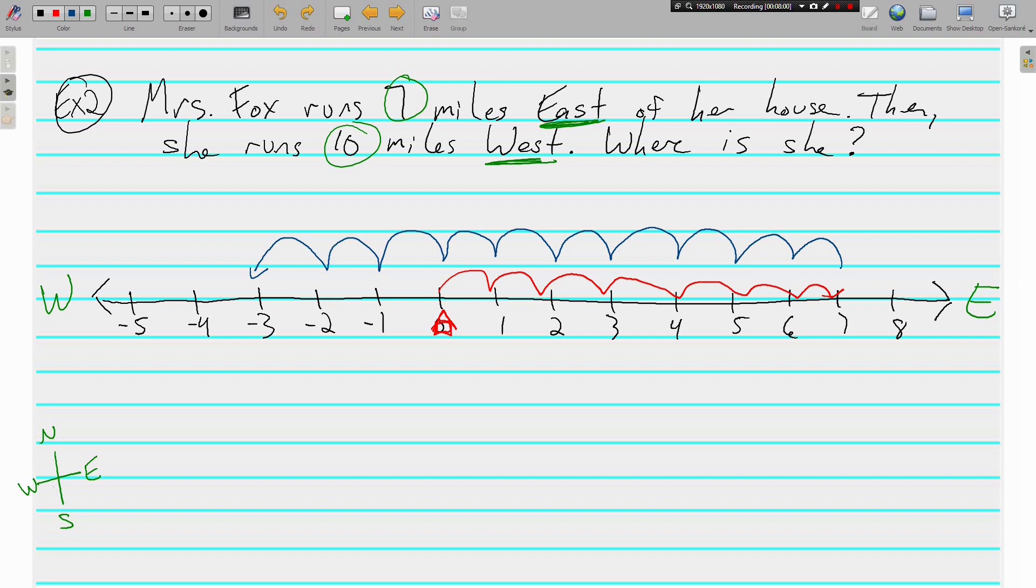Well, where is she? Well, she's right here. Where is this? Mrs. Fox is, she's not negative three miles. Remember, she's a distance from her house. Distance can't be negative. Mrs. Fox is three miles west of her house.